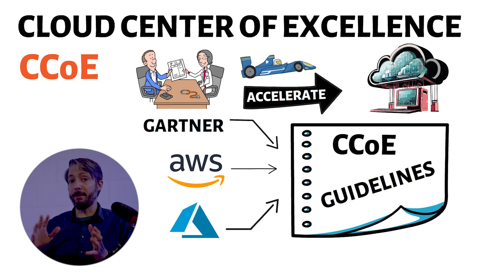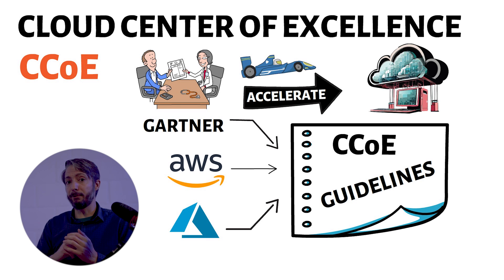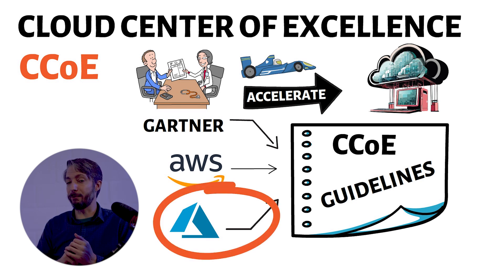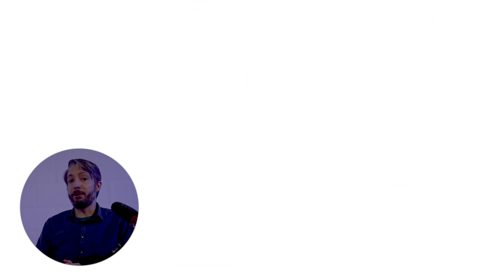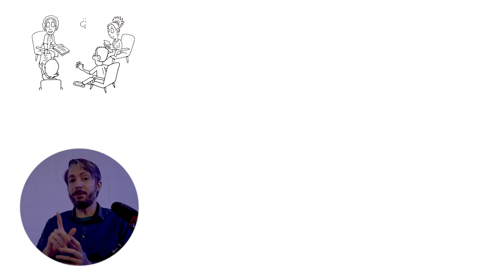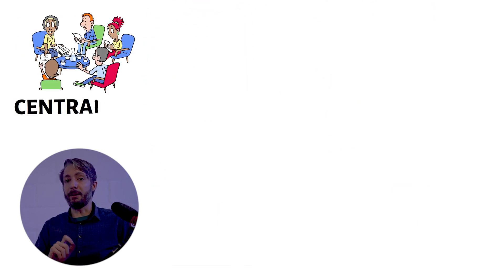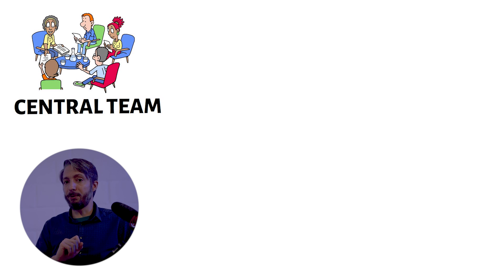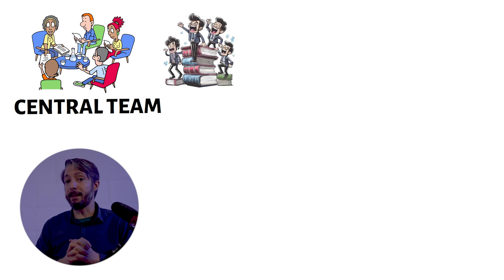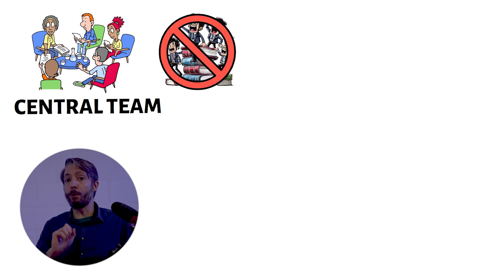They are, of course, in big lines very similar, but for this video I will zoom in and focus on the Microsoft vision. The whole idea of the CCOE is to have one central team or authority who is responsible to ensure that the business can adopt the cloud without being held back by legacy processes or organizations within.